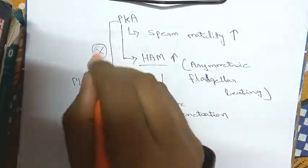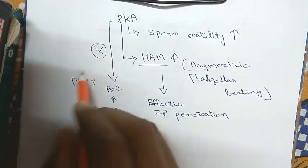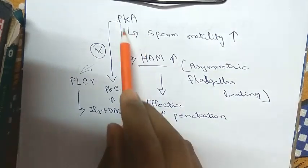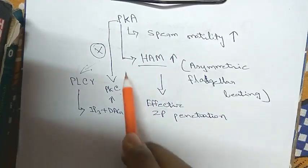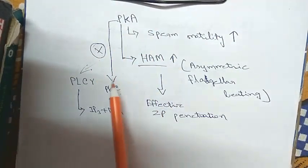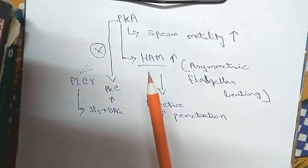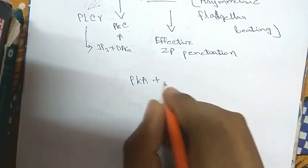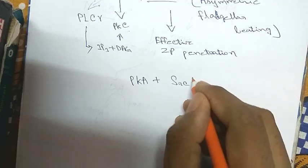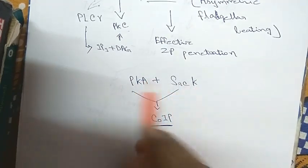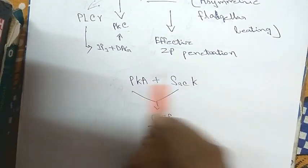Protein kinase A inactivates protein kinase C, probably by inactivating phospholipase C. So PKA and PKC basically regulate each other, but you need to know that both proteins are really important in sperm capacitation. If you artificially knock out PKA or PKC, sperm capacitation and sperm motility will get hampered. Also, through co-immunoprecipitation studies it has been found that PKA co-immunoprecipitates with the Src family of protein kinases, suggesting inter-regulation between these two.